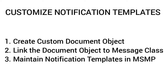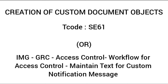Now let us see how to customize email notifications. There are three steps. The first is to create the custom document objects. The second is to associate the custom document object with the message class. The third is to maintain the notification templates in the MSMP workflow. Creating custom documents can be done using transaction code SE61, or via IMG customizing under GRC Access Control — Workflow for Access Control — Maintain Text for Custom Notification Messages.